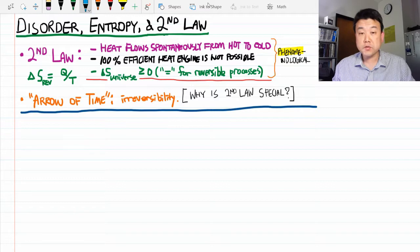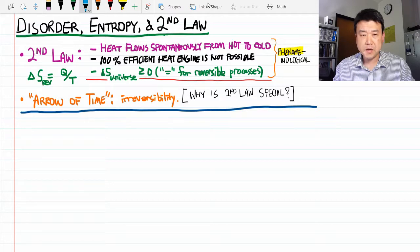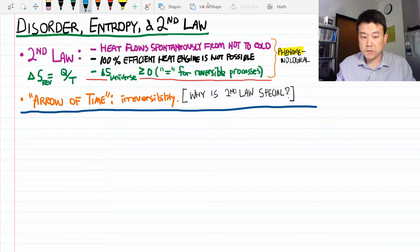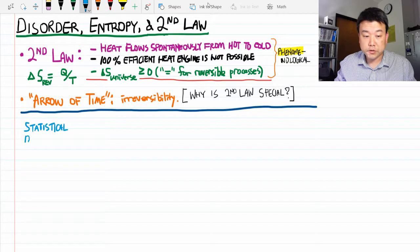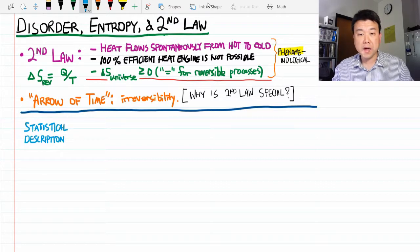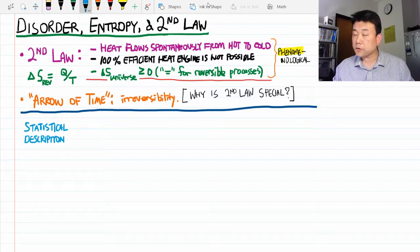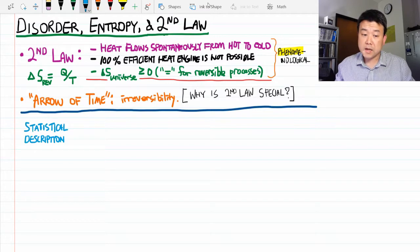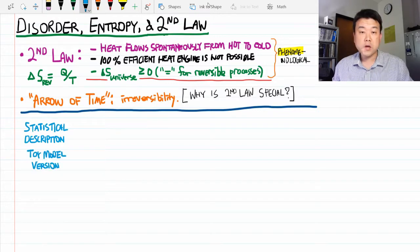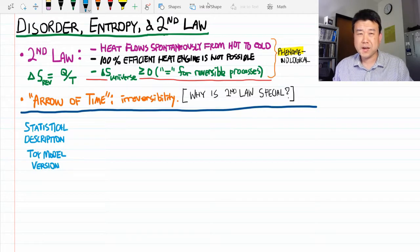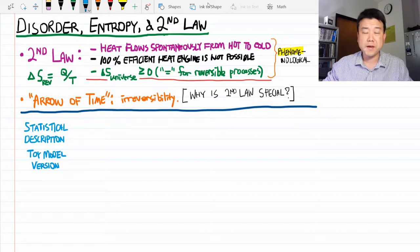Now the challenge with thermodynamics is that the system we are trying to describe is too complex. In physics, we are not used to dealing with 10 to 20, 10 to 30 particles. In upper division statistical mechanics, you are going to develop tools that can be used to analyze these systems. But for the purpose of this class, let me use a toy model to illustrate the ideas without getting too deep into the mathematical analysis.